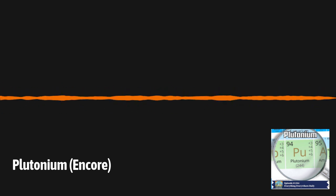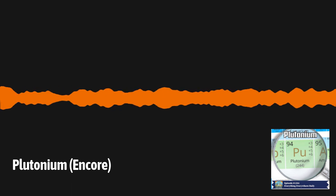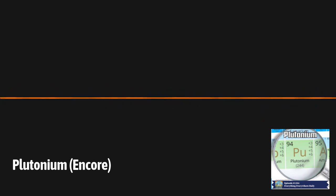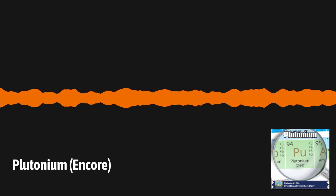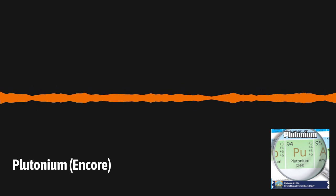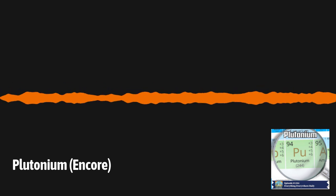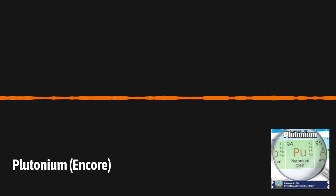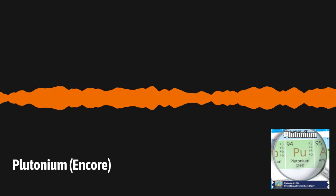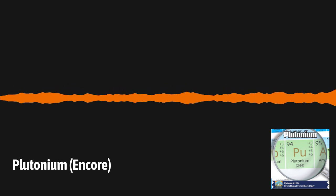In 1939, the last naturally occurring element on Earth, francium, was discovered. However, the periodic table of the elements still wasn't full. The next year, a non-natural element was discovered, plutonium. This new element had fascinating properties which made it incredibly useful and incredibly dangerous. Learn more about plutonium, how it's made, and what it can do on this episode of Everything Everywhere Daily.